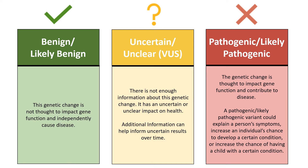Variant classifications can fall into three main categories: benign-likely benign, uncertain, and pathogenic-likely pathogenic. The laboratory will classify a variant as benign-likely benign when it is not known to cause any significant health differences.